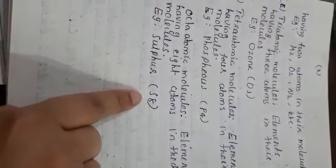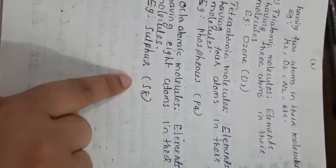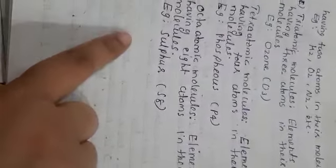Last one is octaatomic molecules. Elements having eight atoms in their molecule are called octaatomics. Octa means eight. Example is sulfur. Sulfur exists as S8. And triatomic, tetraatomic, and octaatomic are generally called polyatomic molecules.